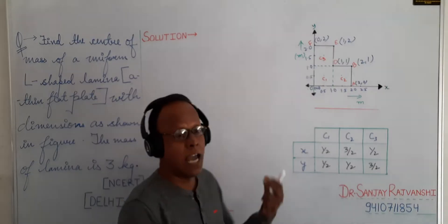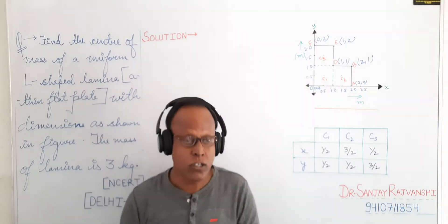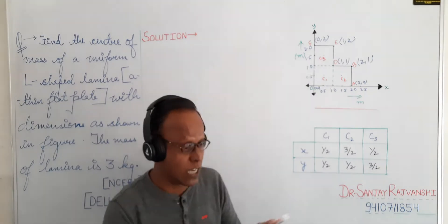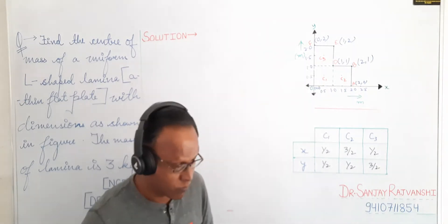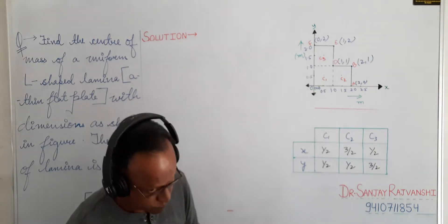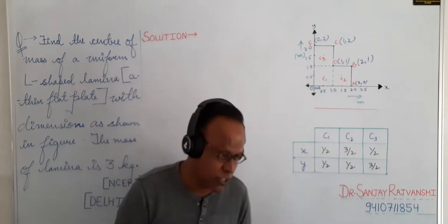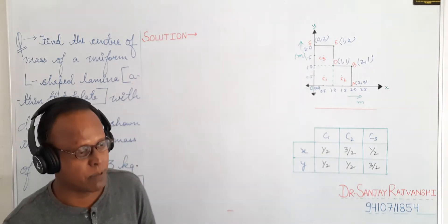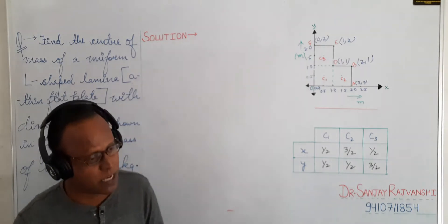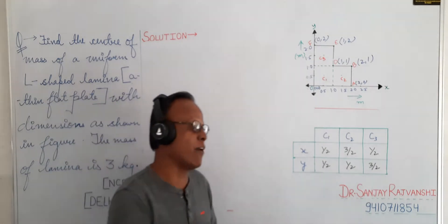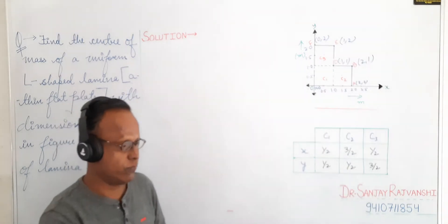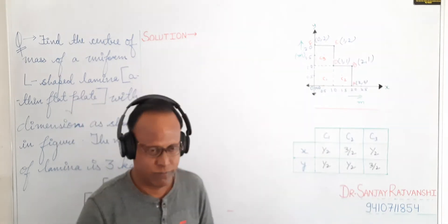Similarly, Xcm = (M1·x1 + M2·x2 + M3·x3) / (M1 + M2 + M3). And Ycm = (M1·y1 + M2·y2 + M3·y3) / (M1 + M2 + M3). That is why we need the values of x1, x2, x3, y1, y2, y3.